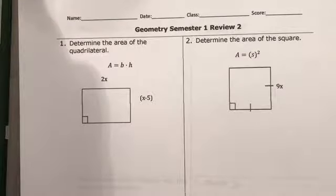Hi, this is your second semester review for geometry. So let's look at the first one. It says determine the area of the quadrilateral.